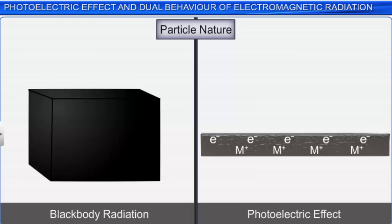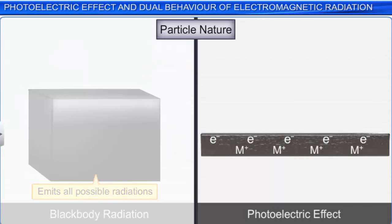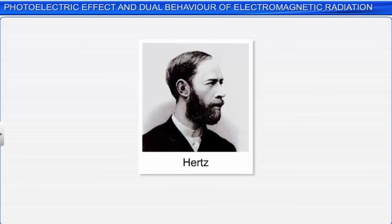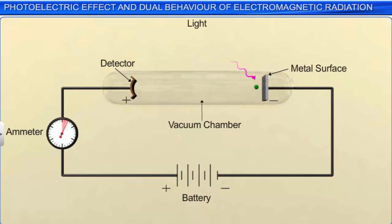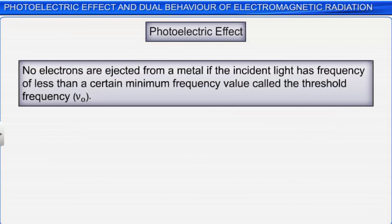Now let us look at the photoelectric effect, which is also explained on the basis of particle nature. In 1887, Hertz performed an experiment in which he observed that when the surface of certain metals such as cesium, potassium, sodium, and rubidium are exposed to a beam of light, electrons were ejected. This is called the photoelectric effect. The electrons thus emitted are called photoelectrons. The following observations were made: No electrons are ejected if the incident light has frequency less than a certain minimum frequency called the threshold frequency. The number of photoelectrons ejected is directly proportional to the intensity or brightness of the incident light. The kinetic energy of the ejected electron is directly proportional to the frequency of the incident light.